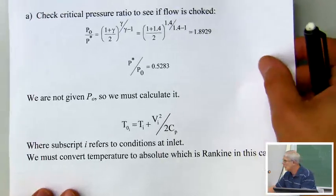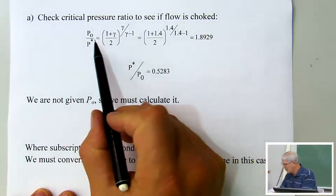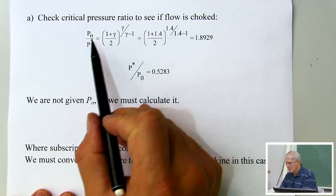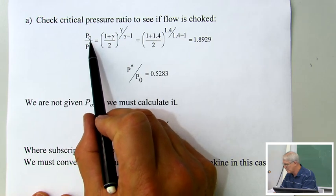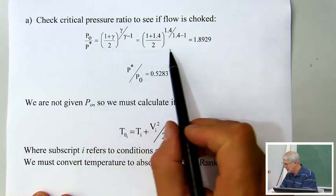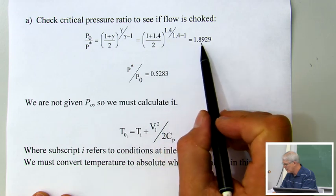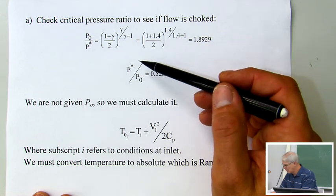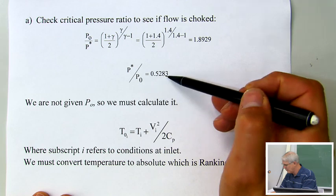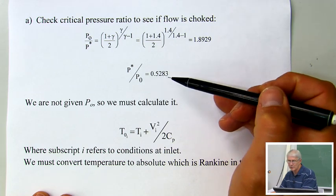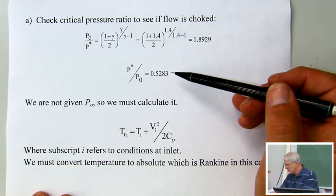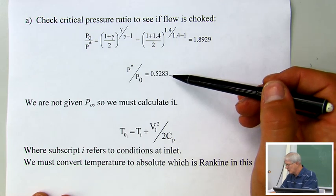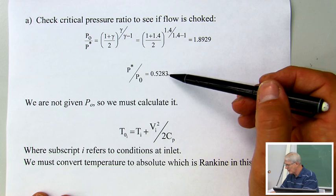Now we check if the flow is choked. Using the Mach number relation with Mach equal to 1, we get P₀ over P star equal to 1.8929, and the inverse P star over P₀ equals 0.5283 — our critical pressure ratio. We're not given P₀ directly; we're given conditions at the inlet, which are not stagnation conditions, so we need to calculate P₀.